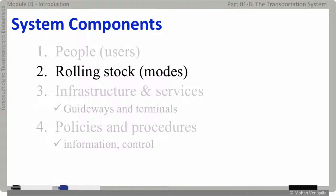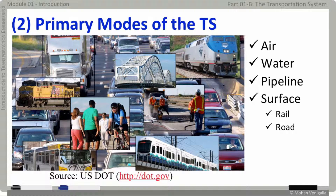The second system component is primary modes of transportation, also called rolling stock. The primary modes are: air, water, pipeline, and surface transportation — which includes rail and road.